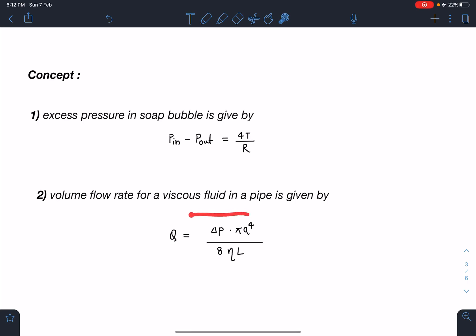You can remember this Poiseuille's equation like current electricity Ohm's law. This Δp will act as a potential difference and this 8ηL/πa⁴ is the resistance of any pipe, and Q is the volume flow rate which is like current.